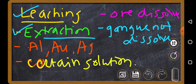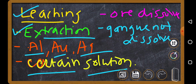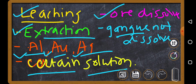Leaching is the first step for the extraction of aluminium, gold, and silver. For the purpose of concentrating the ore, these metallic ores are dissolved in a suitable solvent. The aluminium, gold, and silver ores can be dissolved in this solvent, but the gangue impurities present in the ore powder do not dissolve, so the gangue can be easily separated out.